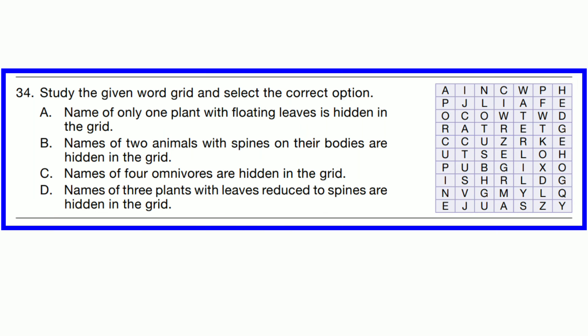Question number 34. Study the given word grid and select the correct option. In option B, it is written: names of two animals with spines on their bodies are hidden in the grid. These are porcupine and hedgehog. Clearly both have spines on their body. So option B is the correct statement.